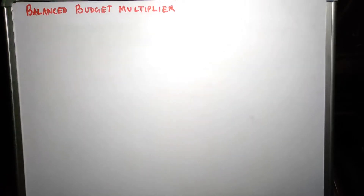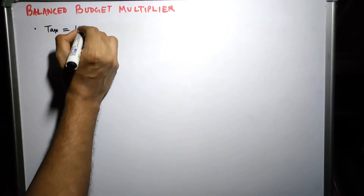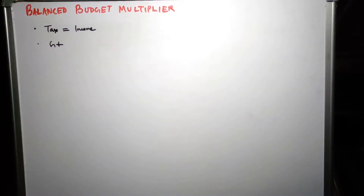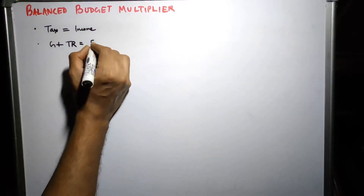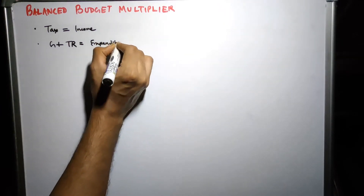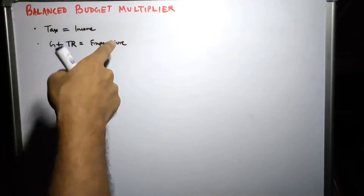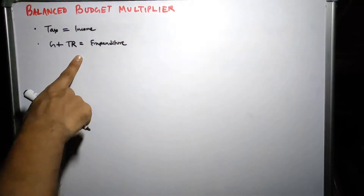In order to understand the balanced budget multiplier we need to know some concepts as far as the government's budget is concerned. For any government the source of income is basically the tax collected from households and firms operating in the economy. The government expenditure covers different public works like maintenance of law and order, construction of roads, dams, buildings, bridges, and so on, along with transfer payments — these two constitute the expenditure side of the government's budget. So the government's budget has an income side which includes tax revenue, and an expenditure side which includes G and TR, where G is the government expenditure and TR is the transfer payments, which are unilateral flows of payments.